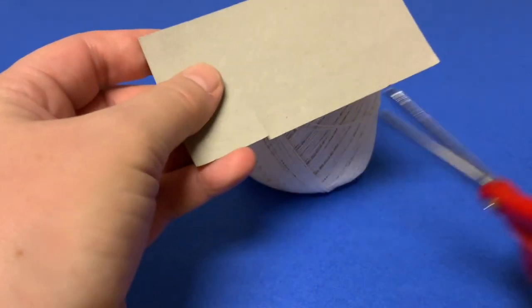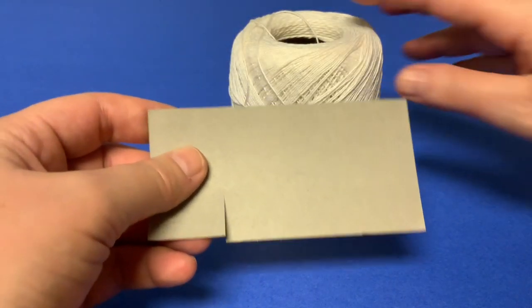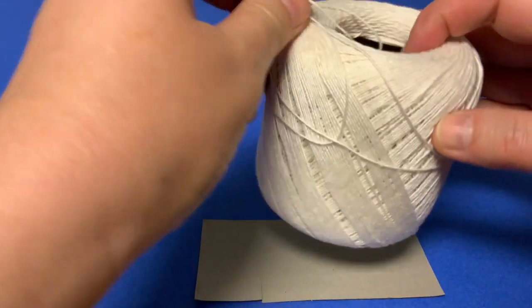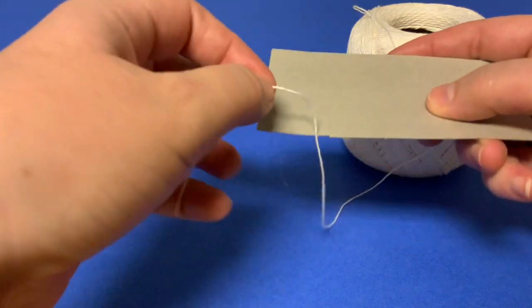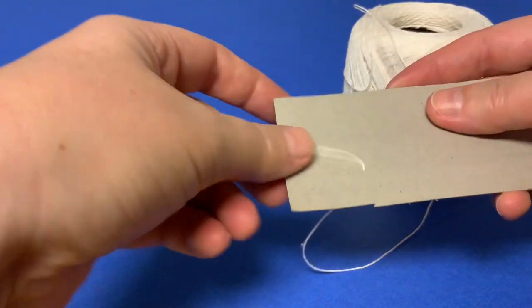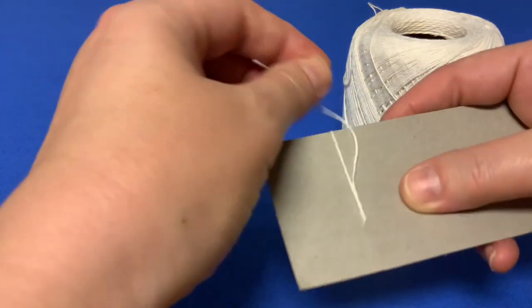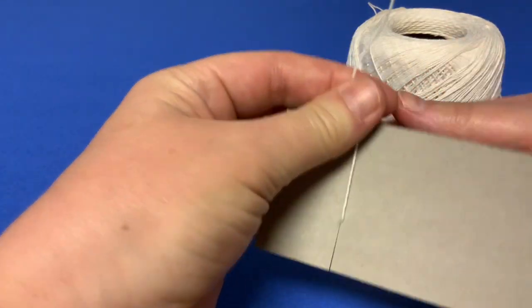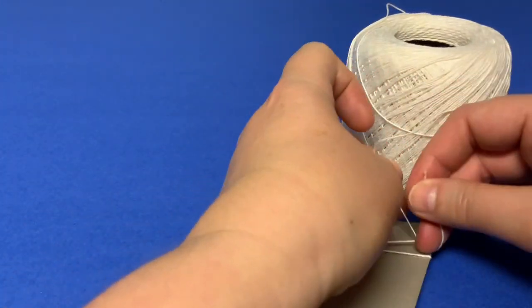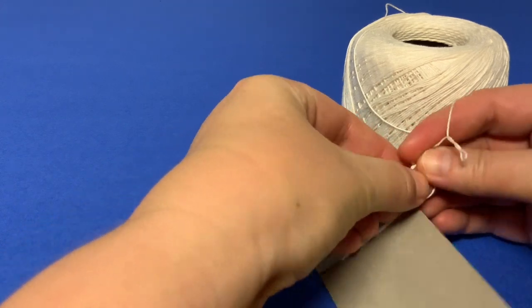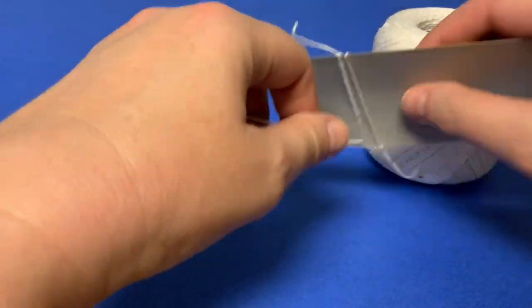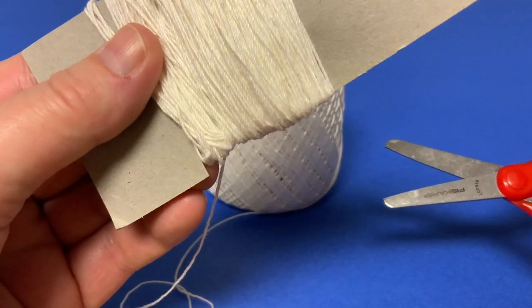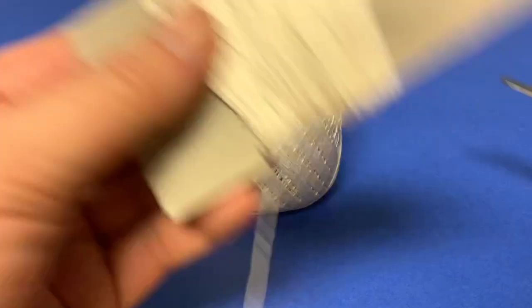To make a handle for my string, I cut a slit into a cardboard rectangle. I place the string into the slit of the cardboard. If you want to make sure that it's secure, you can just wrap it around the cardboard, or you can tie the string into a knot and then wrap as much string as you can around the cardboard. Use a pair of safe scissors or ask an adult to help you cut the string.